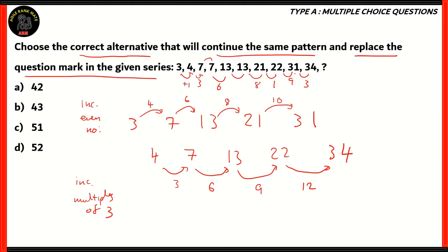How do you find out the next number? The positions go odd, even, odd, even, odd, even, odd, even, odd, even — and then the next number, that's the question mark, is in an odd position. That means it belongs to the series where the differences are increasing even numbers. The next number must be 12 more than 31, so question mark minus 31 equals 12, meaning we add 31 and 12 to get 43.